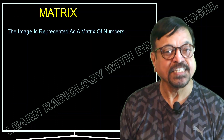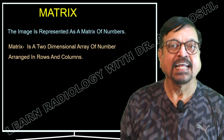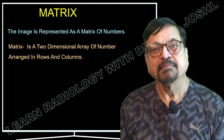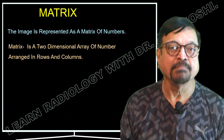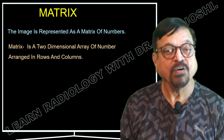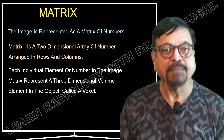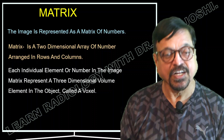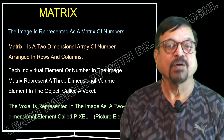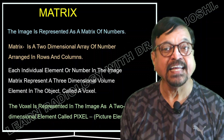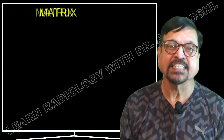What is a matrix? That is another thing we need to know in this series. The image is represented as a matrix by numbers. The matrix is a two-dimensional array of numbers arranged in rows and columns. Each individual element or number in the image matrix represents a three-dimensional volume element in the object — and that is called a voxel. A voxel is represented in the image as a two-dimensional element, which is called a pixel.